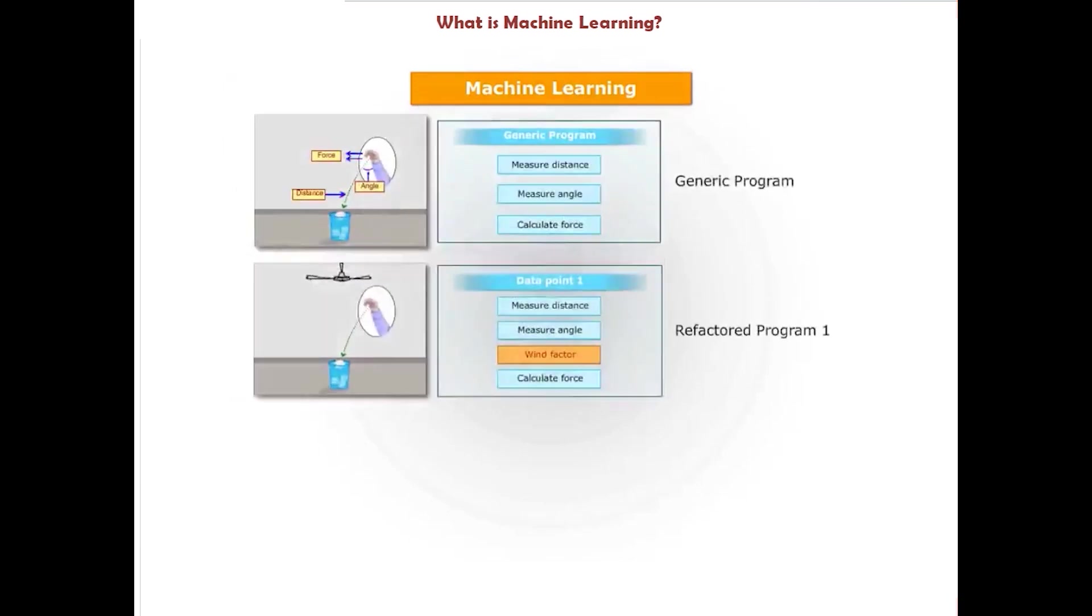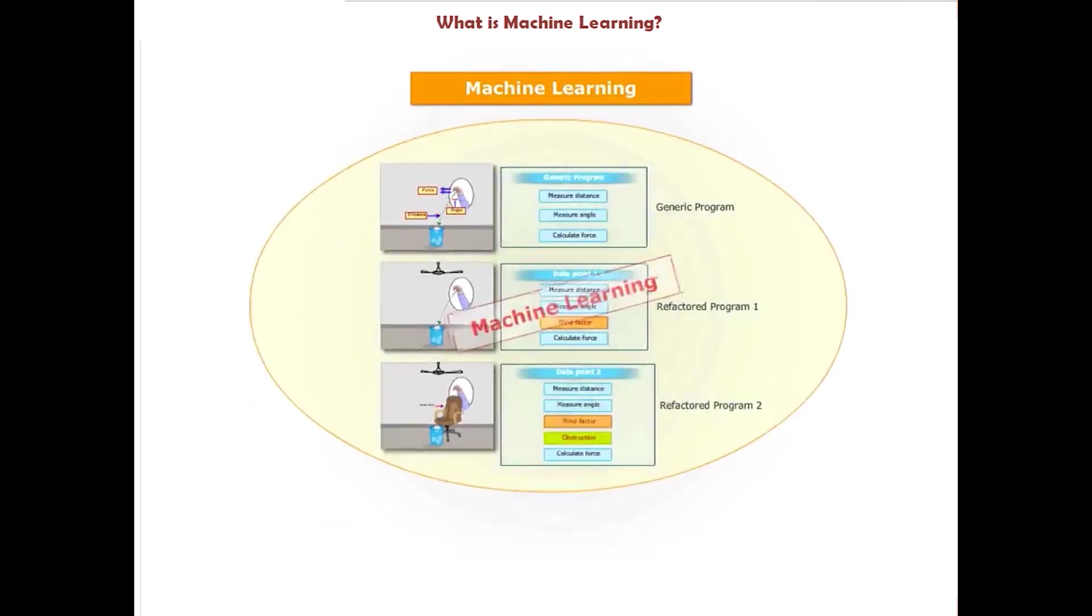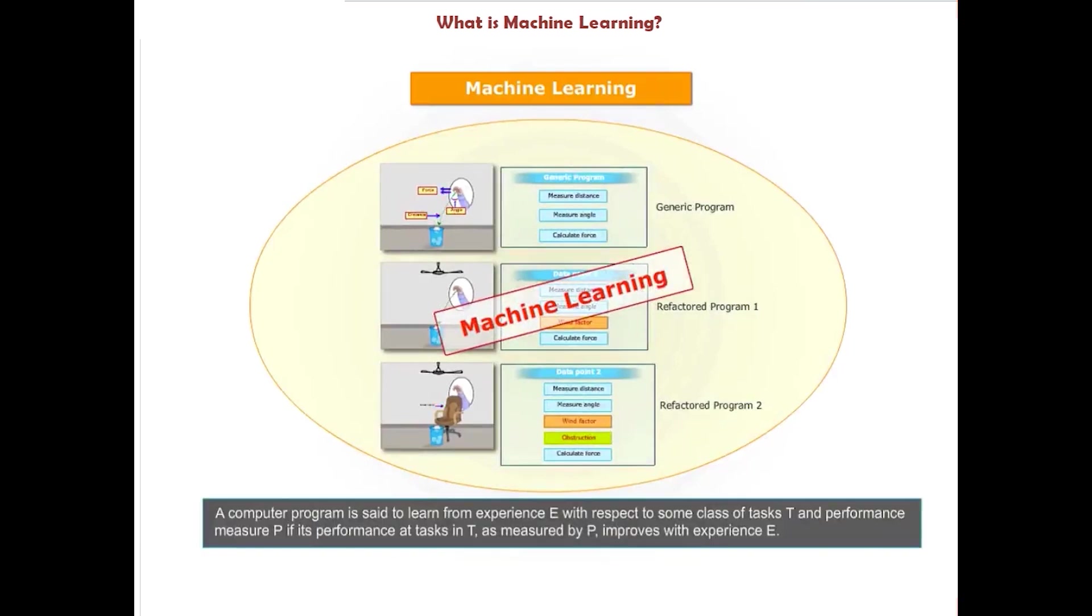Thus another definition of machine learning that is more technical is: a computer program is said to learn from experience E with respect to some class of tasks T and performance measure P if its performance at tasks in T as measured by P improves with experience E.